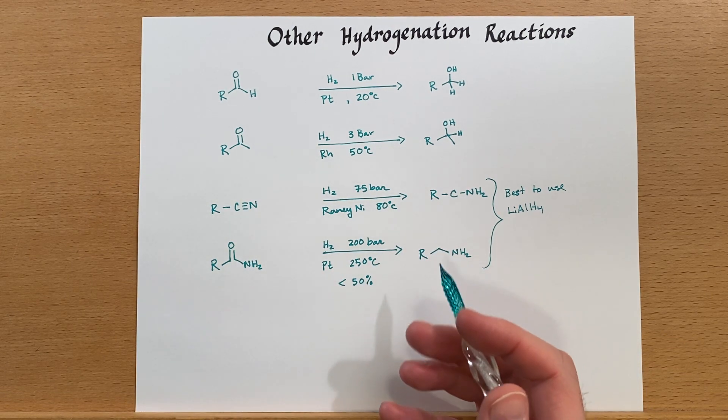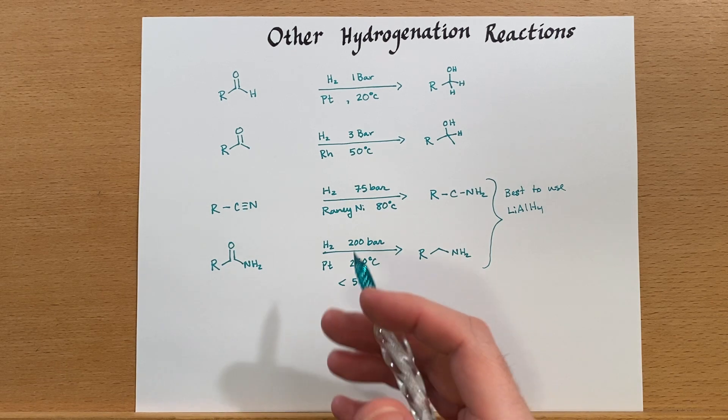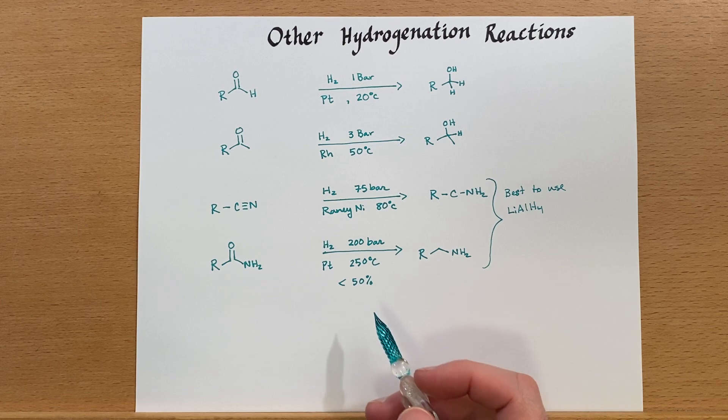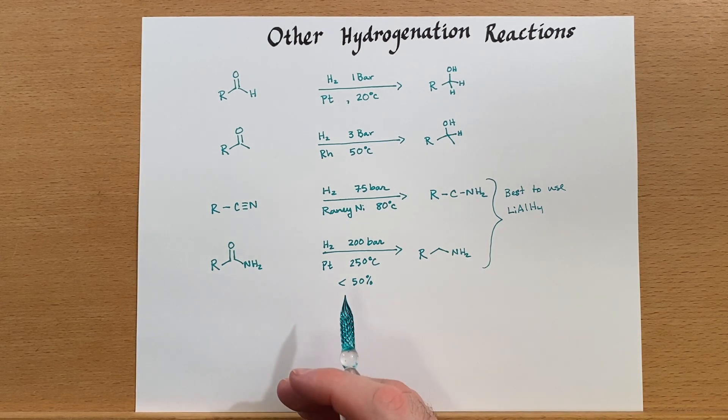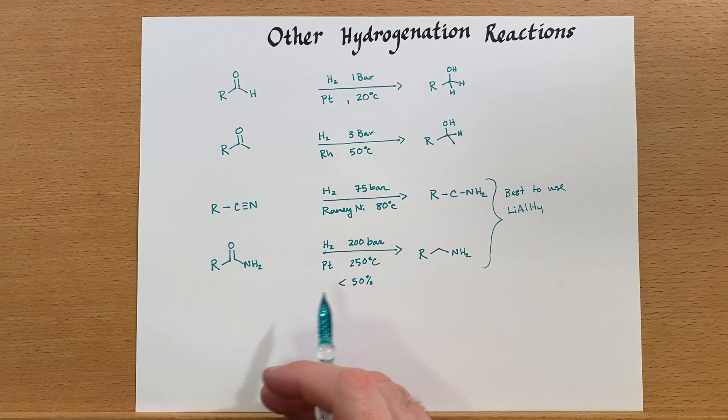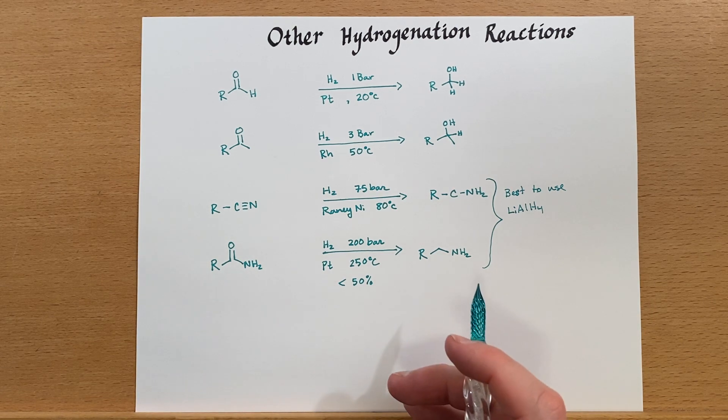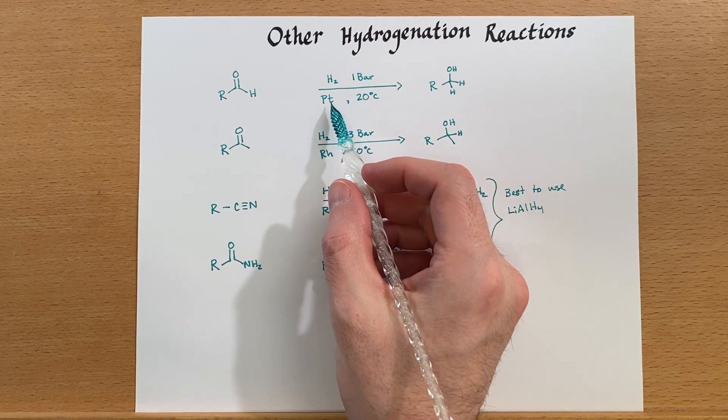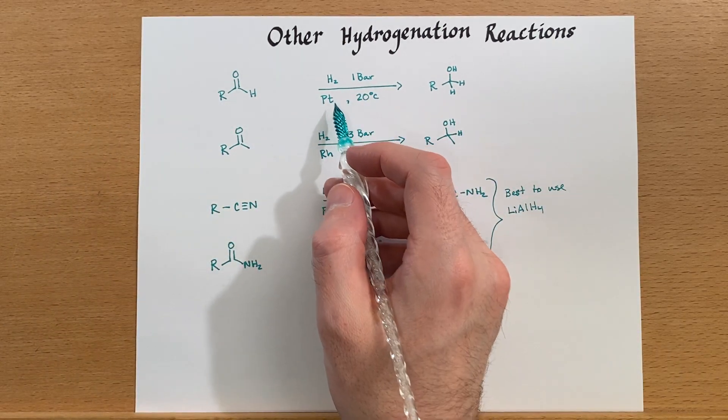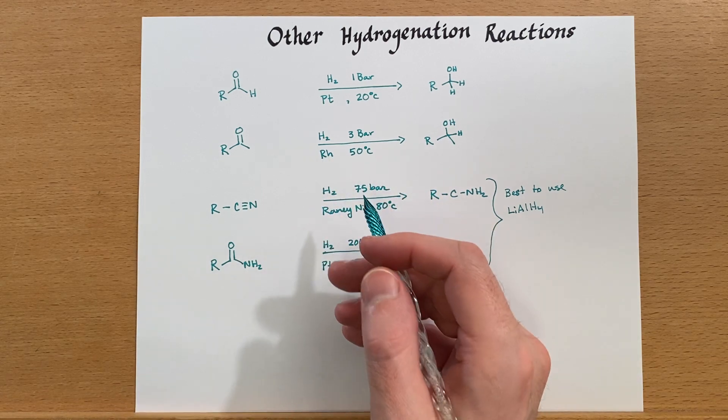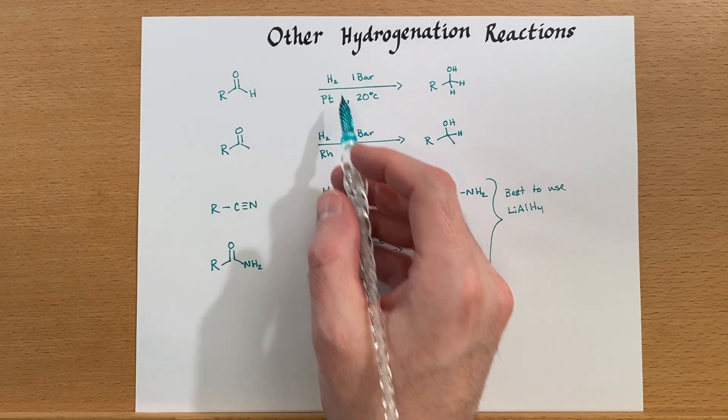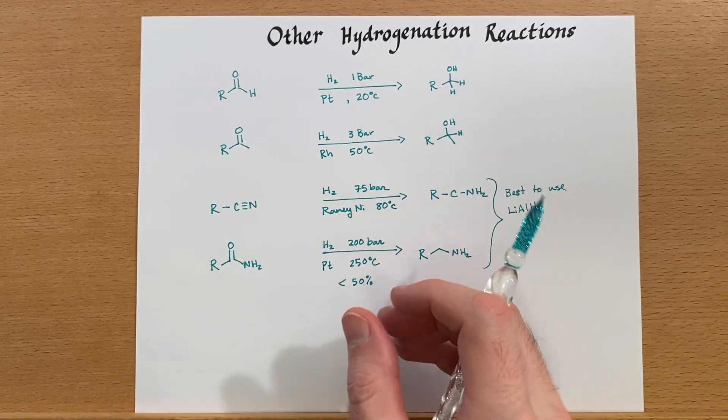So that is one reason to use catalytic hydrogenation. This particular process is often favored by industry because they can have very large reaction chambers with large meshes of platinum or the other metals that they would wish to conduct the reaction with, and then they only need hydrogen gas to be pumped in.